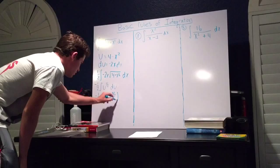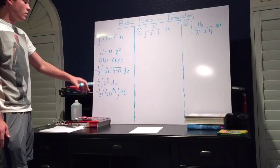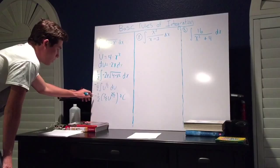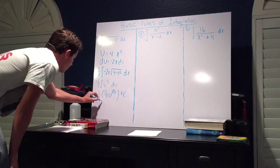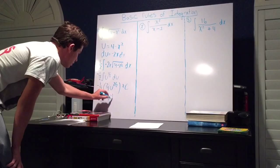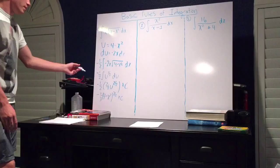Now we can substitute u for what we called it back in the initial part of the problem, and distribute the negative 1 half to the 2 thirds u to the 3 halves. So we'll get negative 1 half times 2 thirds times 4 minus x squared to the 3 halves plus c.